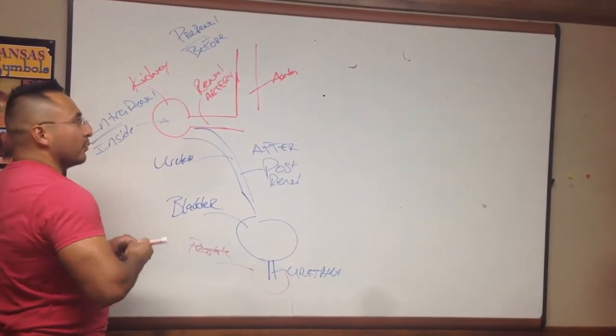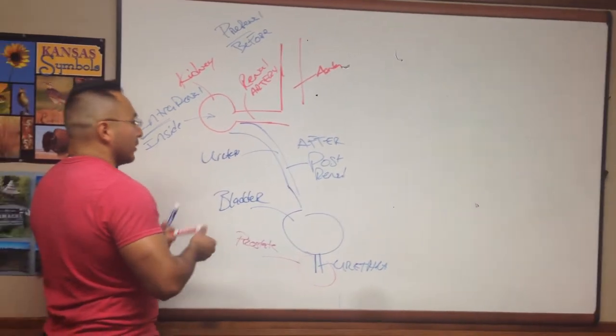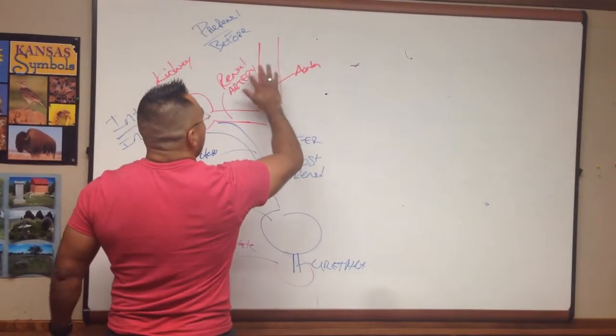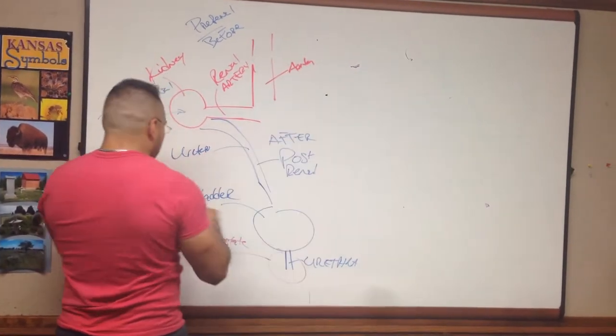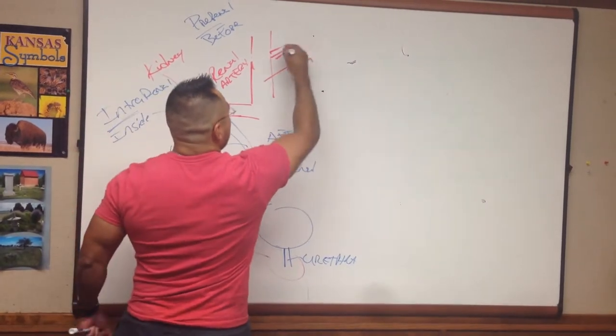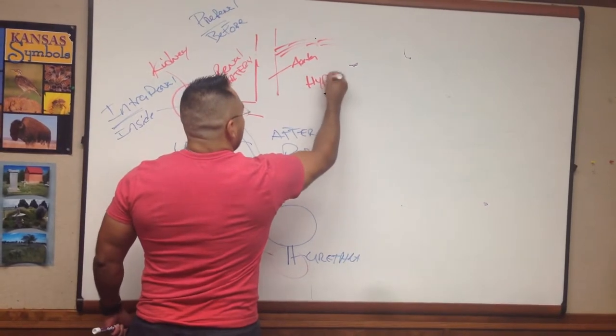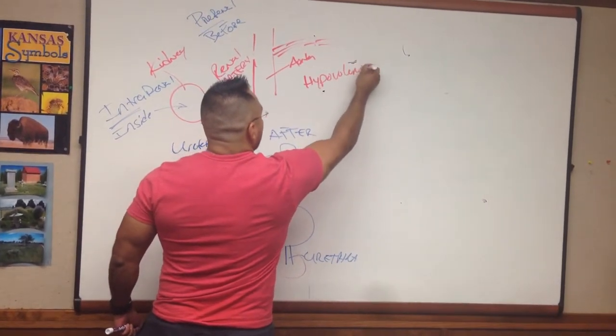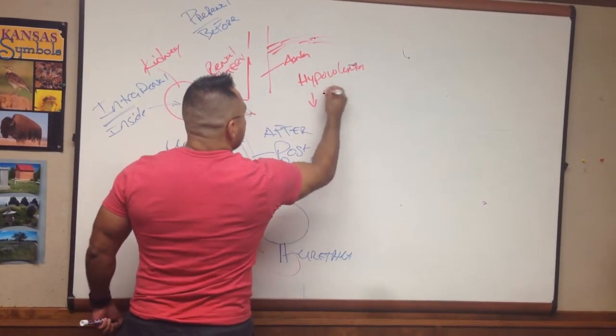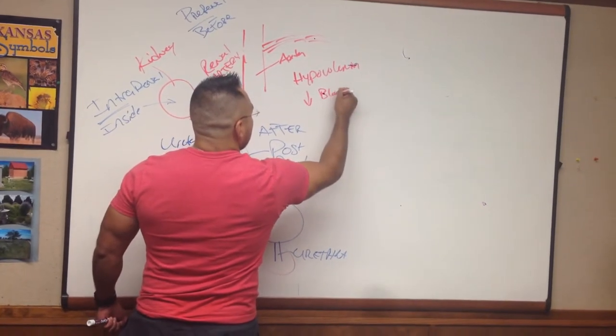So things that would affect prerenal failure would be something like, if you get stabbed, shot, and you're just bleeding out all kinds of blood, what's that going to do? It's going to cause hypovolemia or decrease in blood volume, which is the same thing, which will result in decreased blood pressure.